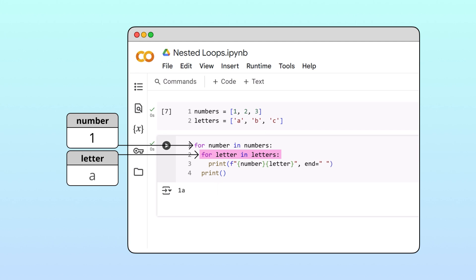In the second iteration, it updates letter to b and prints 1b. And in the third iteration, it updates letter to c and prints 1c.